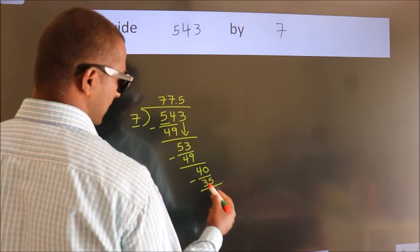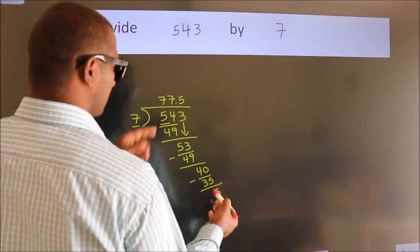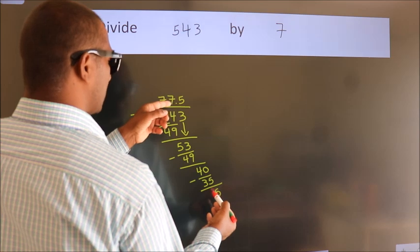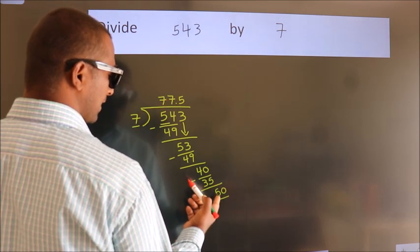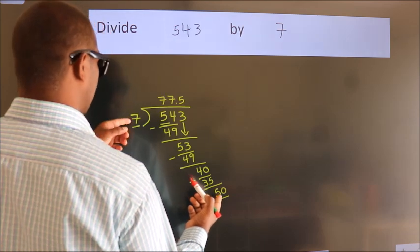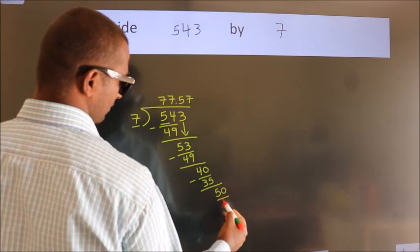Now we subtract and get 5. After this, we already have the decimal, so we directly take 0, giving us 50. A number close to 50 in the 7 table is 7 sevens, which is 49.